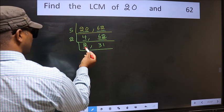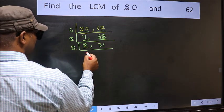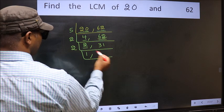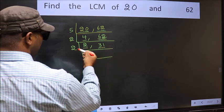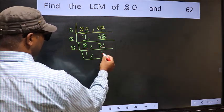Now here we have 2. 2 is a prime number. So 2, 1 is 2. The other number 31 not divisible by 2. So we write it down as it is.